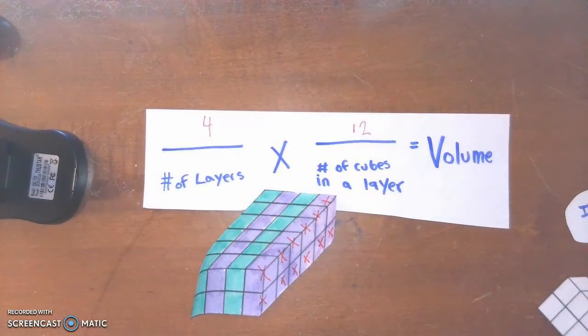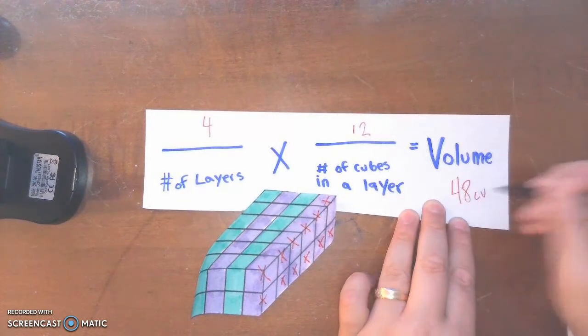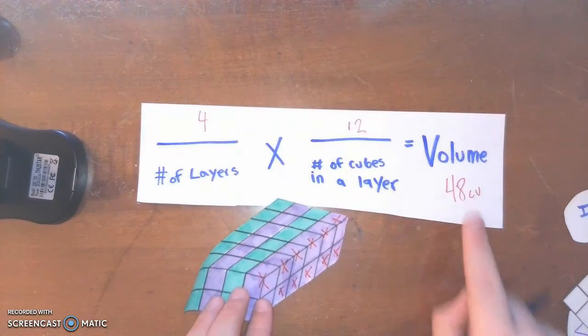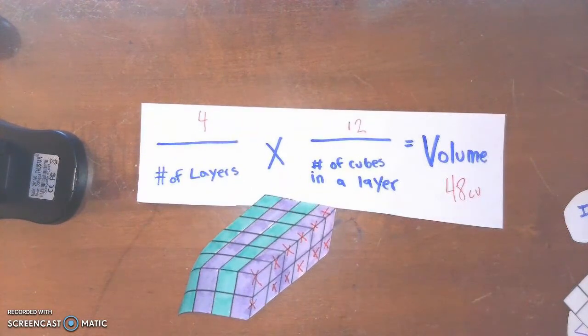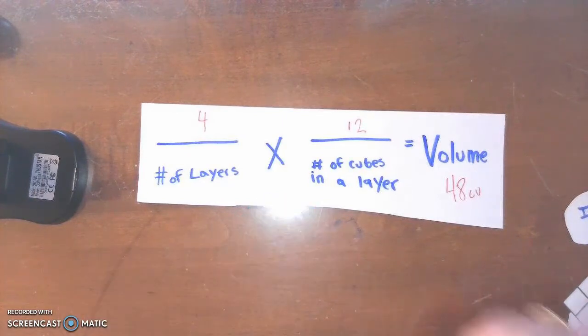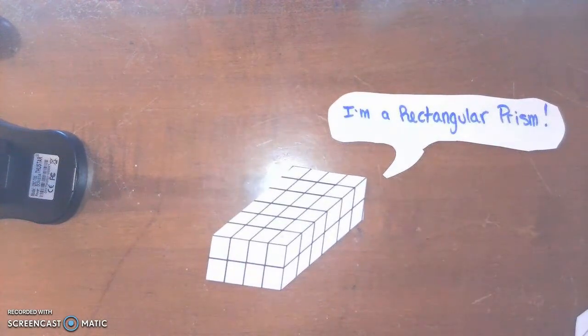is 48 cubic units. And it's important to always express volume measurements in terms of cubic units. So that's just one way that you could break up this rectangular prism.